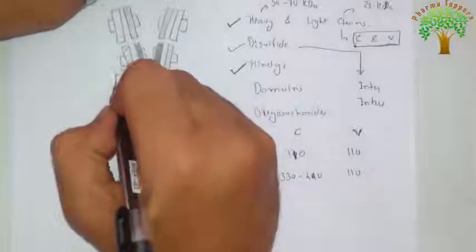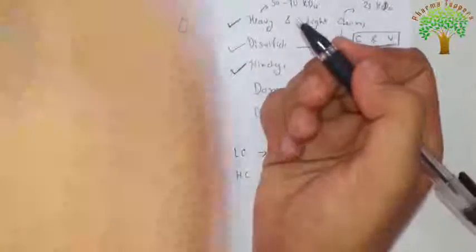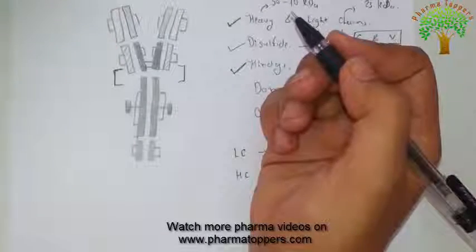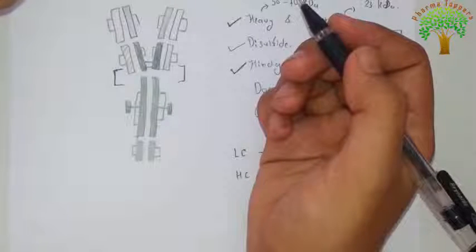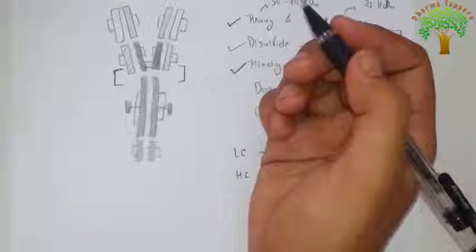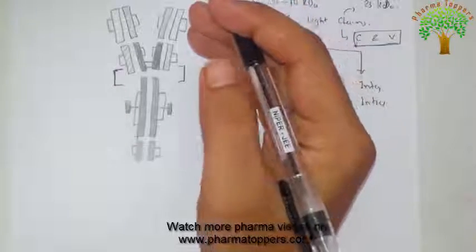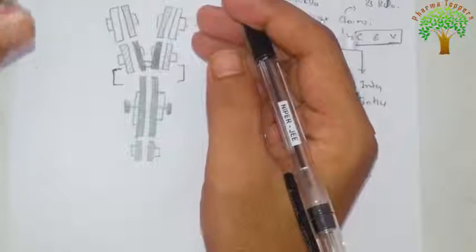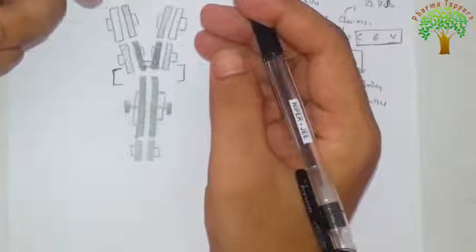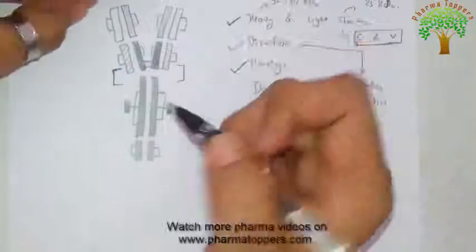Next is the hinge region. The hinge region is the connector region — it is the arm of the antibody molecule — and it provides some flexibility to the antibody. Next is the domain: in the 3D structure of the immunoglobulin there are globular regions, and within those globular regions there are intra-chain disulfide bonds. These are termed as the domains.